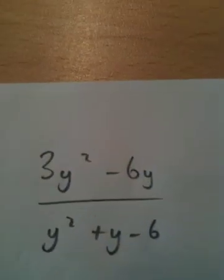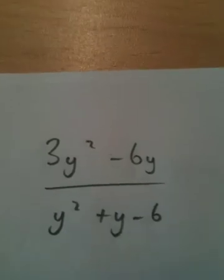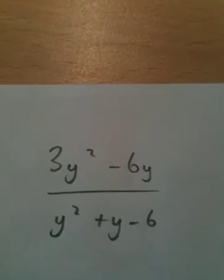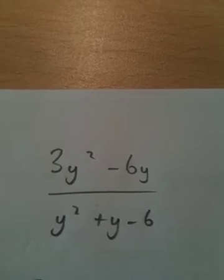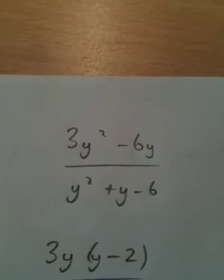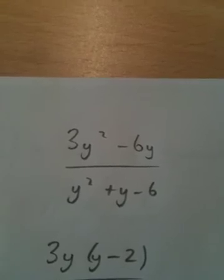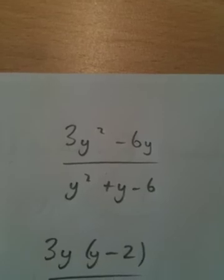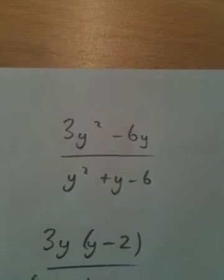Number 6, a bit of algebra, it says simplify this. Write this in its simplest form. At the moment, nothing cancels. We need to, questions like this, we always look to factorize. So, the top has a common factor of 3y. 3 goes into 3 and 6, y goes into y squared and y. So, 3y times y minus 2 gives 3y squared minus 6y.